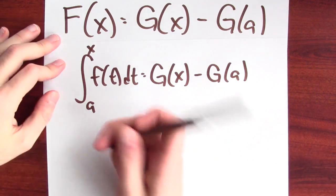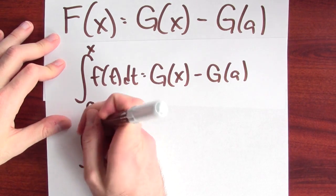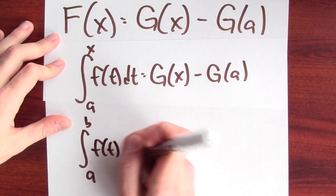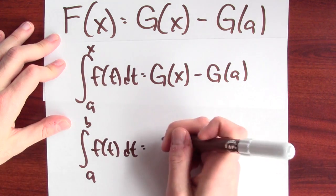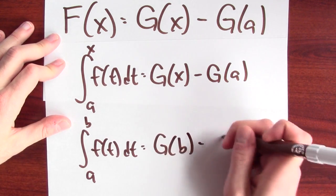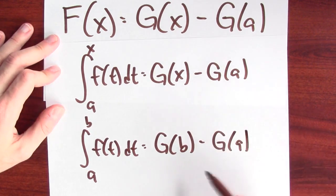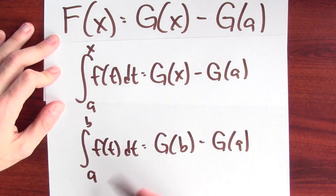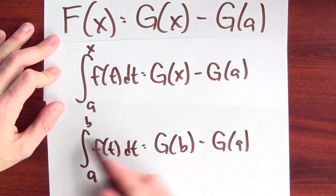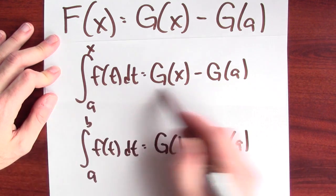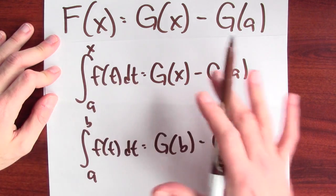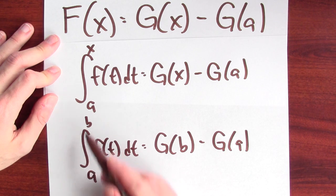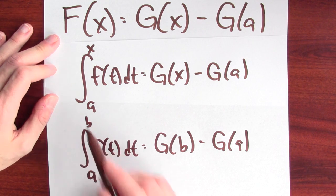And this solves our original problem. The original problem that we wanted to answer was just the integral from a to b of f of t dt. And that, by substituting in b for x, is big G of b minus big G of a. But we wouldn't have been able to understand this had I not fit this specific problem into a whole collection of problems. Integrating from a to x allowed us to understand this particular integral from a to a specific value b.